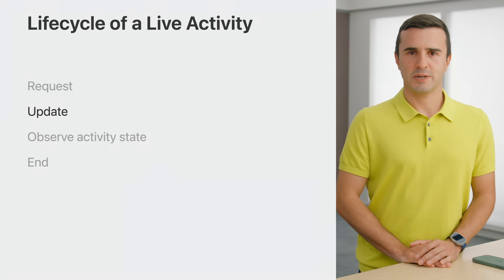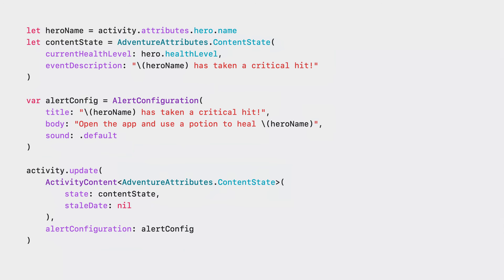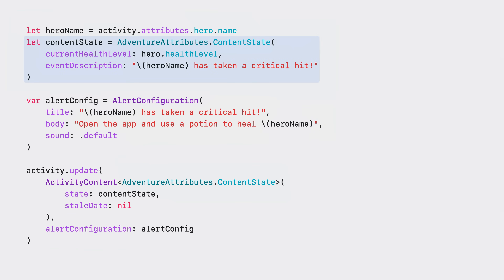Now that I can request my live activity, I'll look into how I can update the adventure when my hero goes through thrilling tasks. The dynamic attributes tell me when to update my live activity. Whenever the event description or hero's health level changes, I'll update my activity. Oh no — the hero takes a critical hit from a boss! So I create a content state that reflects the change in the health level and describes the event.